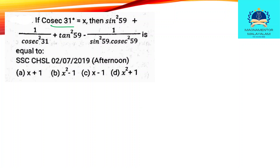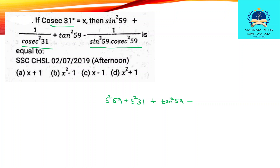Then, find sin 259. 1 by cosec 31. Then sin 231, 2 by cosec 31. 1 by cosec 31. Then sin 231, 2 to tan 259. Tan 259. Then minus 1 by sin 259 into cosec 259. Sin 259 into cosec 259. 1 by sin 259. Cancel. Sin 2 into cosec 310 equals 1. Now, 1 and minus 1 gives 0.